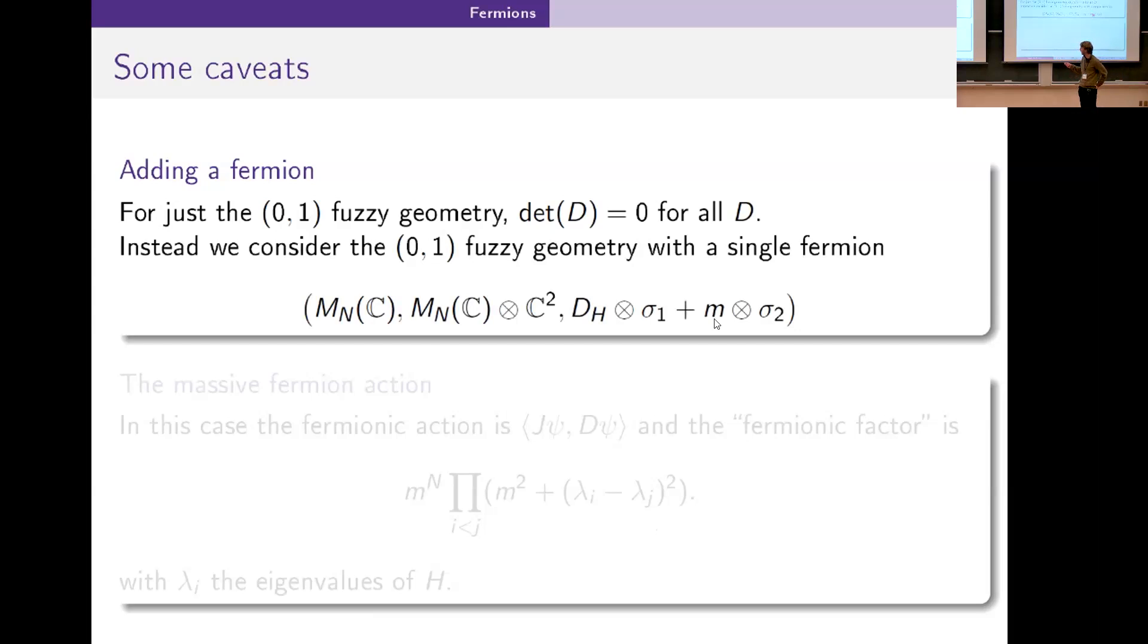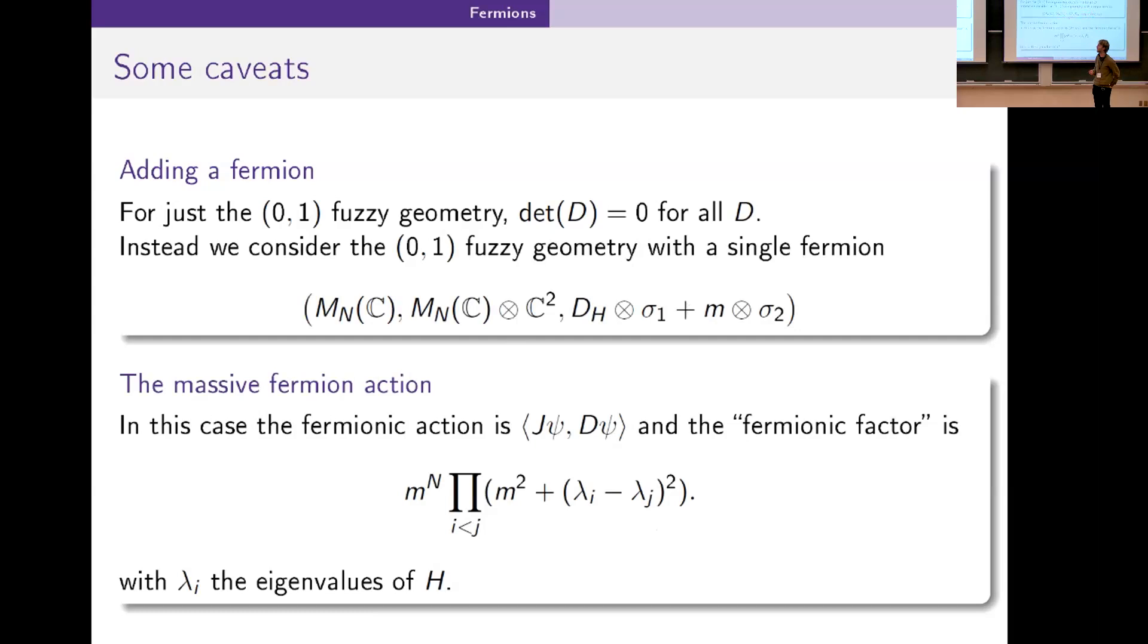Doing that we get this bigger spectral triple where you can compute the Pfaffian to be this expression here. The mass shows up and you can see if the mass is indeed zero, you would get zero here.